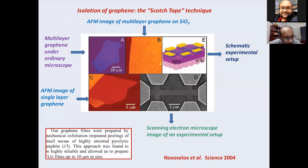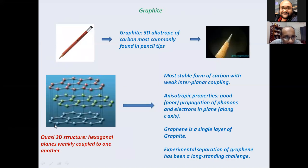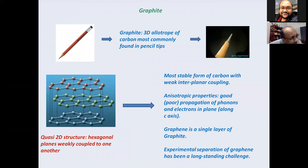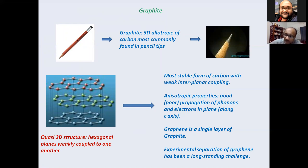A question was raised about whether the weak inter-layer coupling in graphite is experimentally observed or theoretical. It is both: people computed the structure theoretically as early as 1949 (Wallace's first paper), but even before that, Krishnan was one of the first to show through transport measurements that these properties are anisotropic. It is well established both experimentally and theoretically.